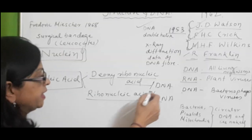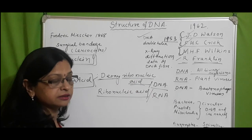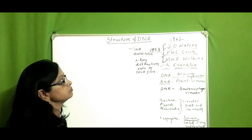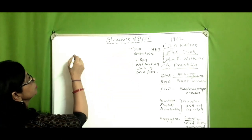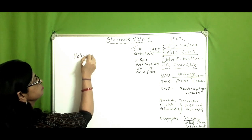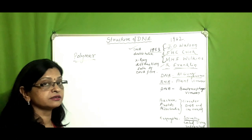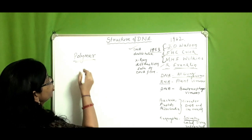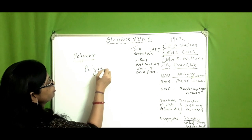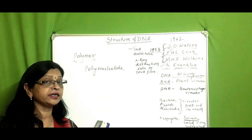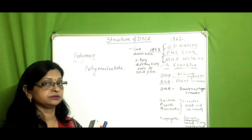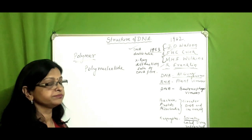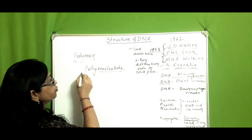So what is DNA? DNA is Deoxyribonucleic Acid. DNA is a polymer, meaning it is made up of many monomers. DNA is a polynucleotide — it is composed of two polynucleotide strands, and each strand is made up of many nucleotides joined by phosphodiester bonds.